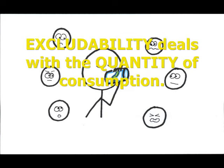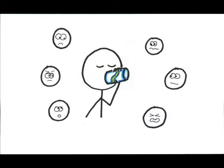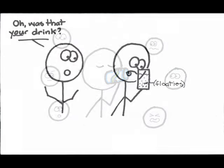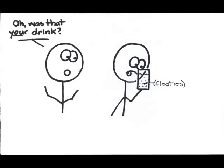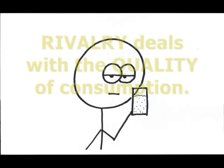Excludability deals with the quantity of consumption. There's rivalry in consumption if person A's consumption interferes with the quality of consumption for anyone else. Think about that drink again. Even if you do share it, the quality of your consumption is probably diminished. Rivalry deals with the quality of consumption.